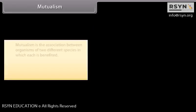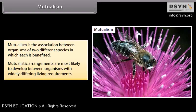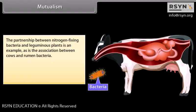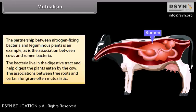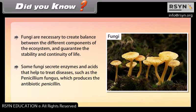Mutualism is the association between organisms of two different species in which each is benefited. Mutualistic arrangements most likely develop between organisms with widely differing living requirements. The partnership between nitrogen-fixing bacteria and leguminous plants is one example, as is the association between cows and rumen bacteria. The bacteria live in the digestive tract and help digest the plants eaten by the cow. The associations between tree roots and certain fungi are often mutualistic. Fungi are also necessary to create balance in the ecosystem, and some fungi such as penicillium produce the antibiotic penicillin.